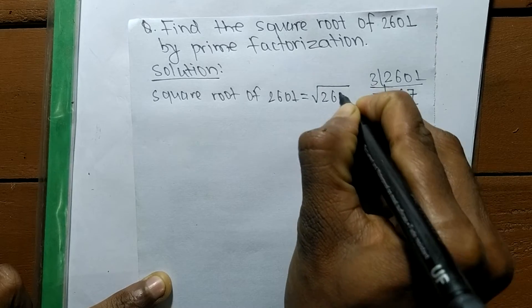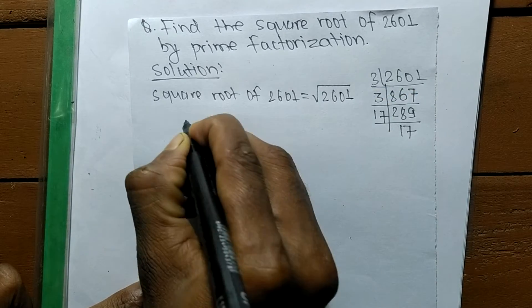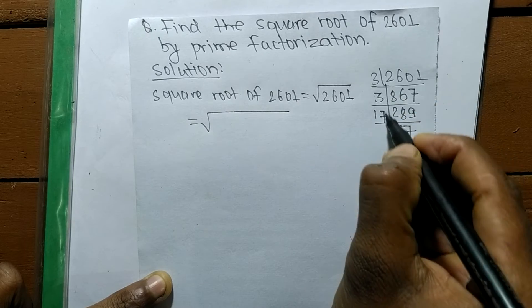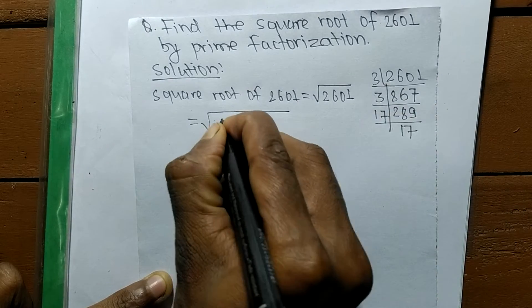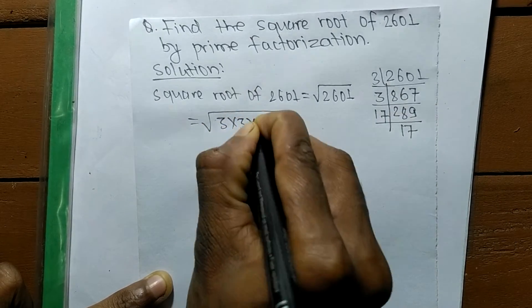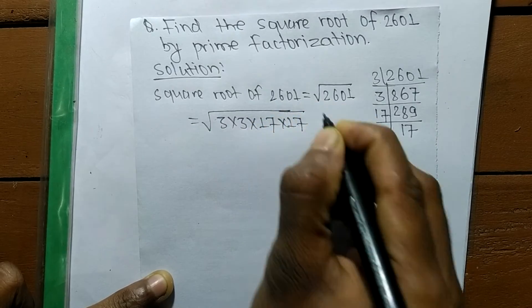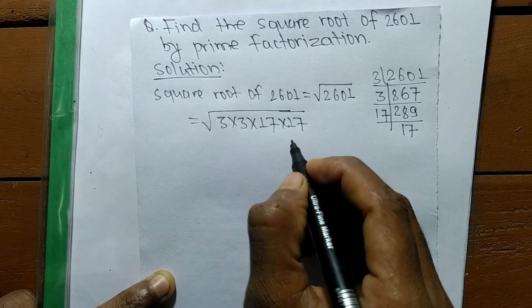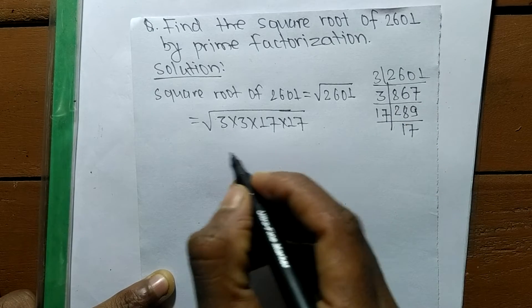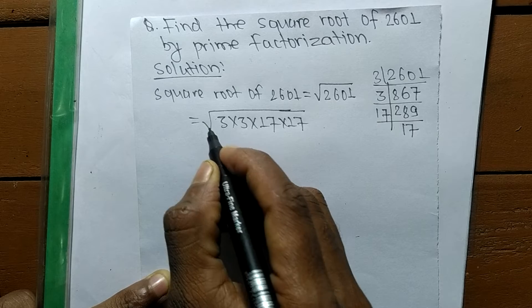So it is equal to, we got the numbers here: 3 times 3 times 17 times 17. So we have written here all the prime factors of 2601.